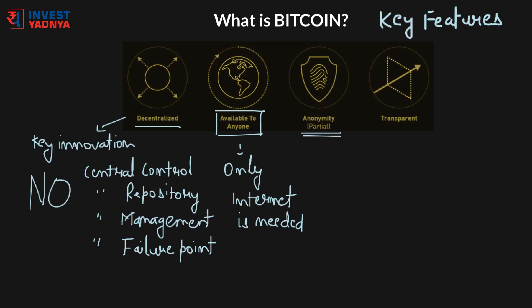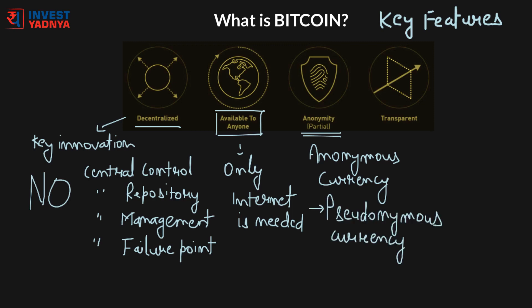The next feature is anonymity. Bitcoin is often described as an anonymous currency because it is possible to send and receive bitcoins without giving any personally identifying information. However, it is not completely anonymous but pseudo-anonymous. Sending and receiving bitcoin is like writing under a pseudonym — if an author's pseudonym is ever linked to their identity, everything written under that pseudonym becomes linked to them. Experts have ways to achieve near-complete anonymity, but there are also experts who have ways to remove that anonymity in the Bitcoin network.